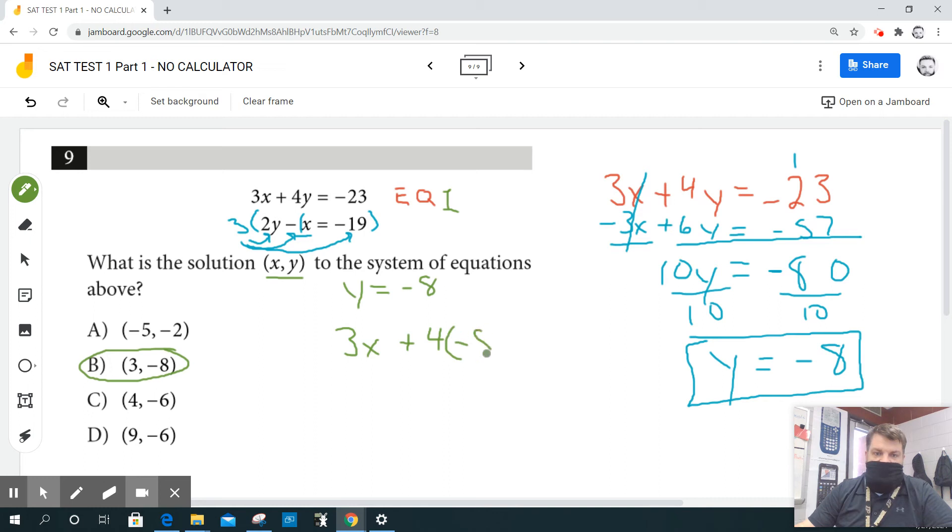Now what's four times negative eight? It's negative 32. So I wrote that backwards.